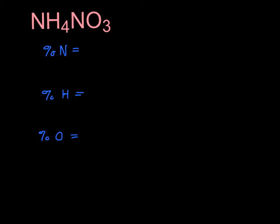So let's try to find the percent composition of ammonium nitrate. That means we want to find the percentage of N and the percentage of H and the percentage of O. So the first thing I'm going to do is find the molar mass of this compound, ammonium nitrate. If you take two nitrogens and four hydrogens and three oxygens, you get 80.06 grams per mole.